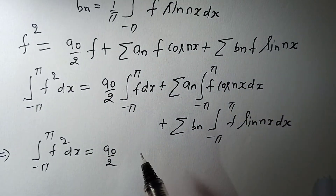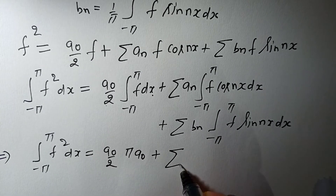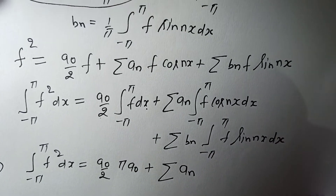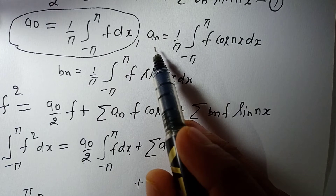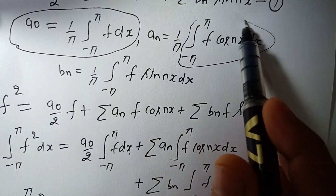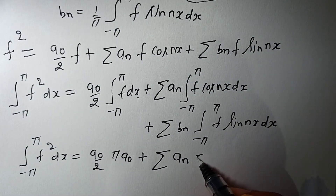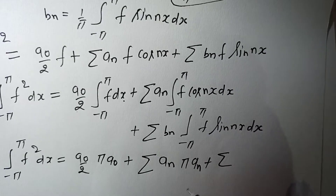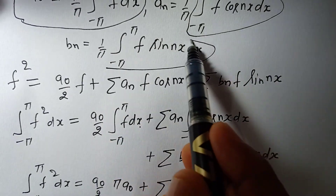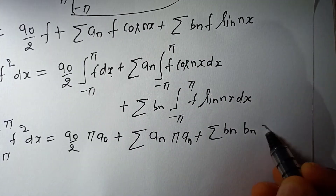So we can write (a₀/2)·π·a₀. For the next term, Σ aₙ ∫₋π^π f·cos(nx) dx — from the Euler formula, aₙ = (1/π)∫₋π^π f·cos(nx) dx, so this integral equals π·aₙ. Similarly, Σ bₙ ∫₋π^π f·sin(nx) dx — from the Euler formula, ∫₋π^π f·sin(nx) dx = bₙ·π.